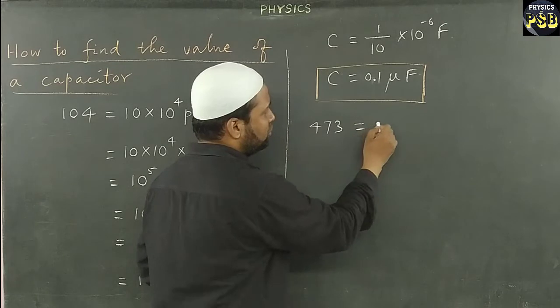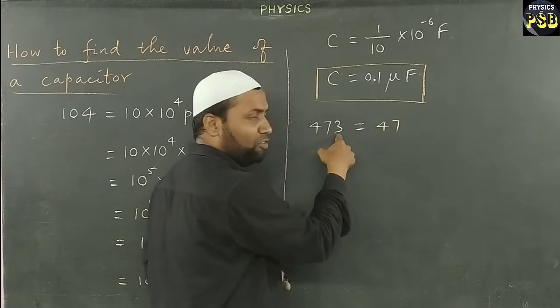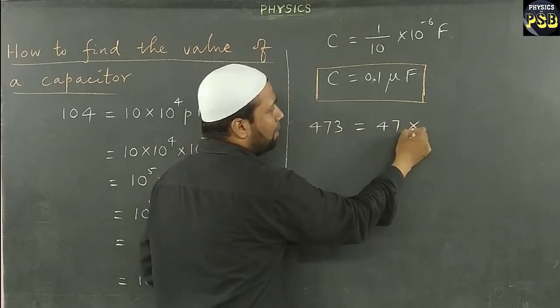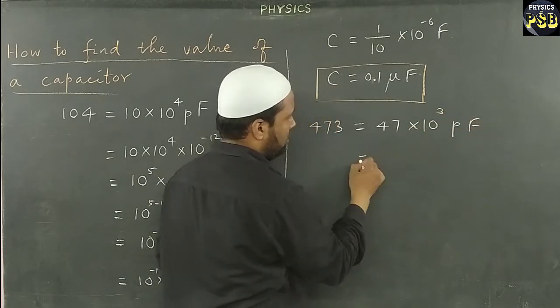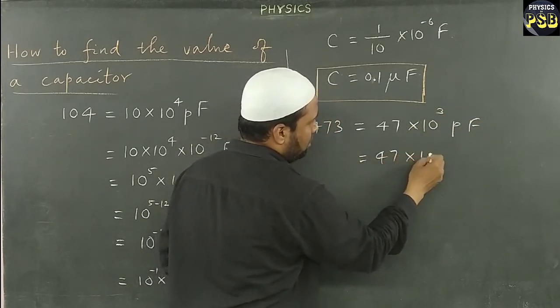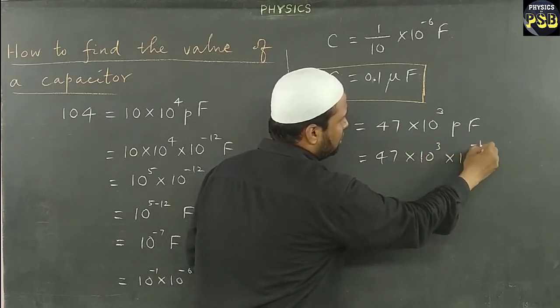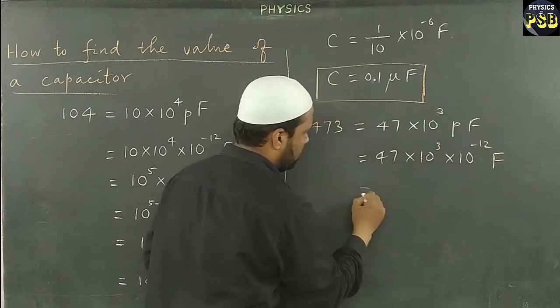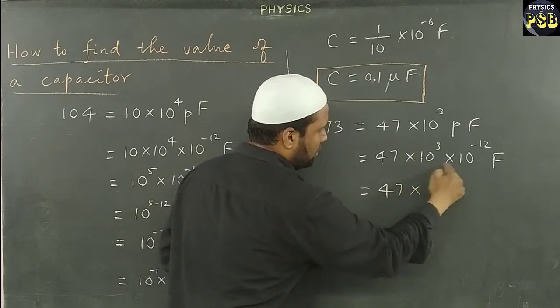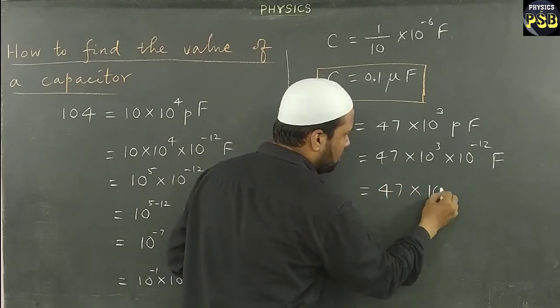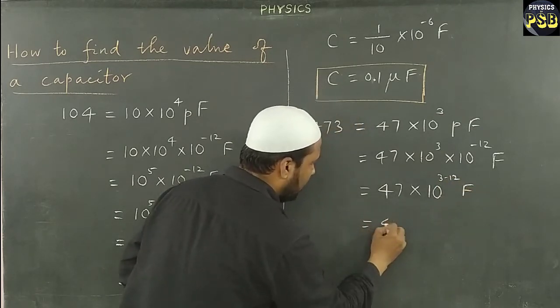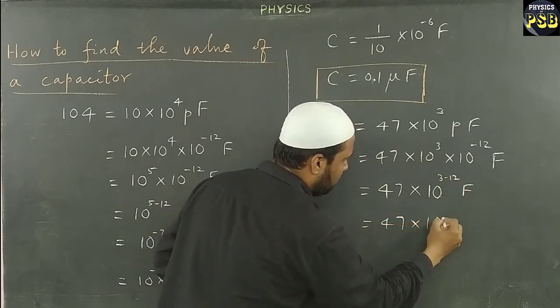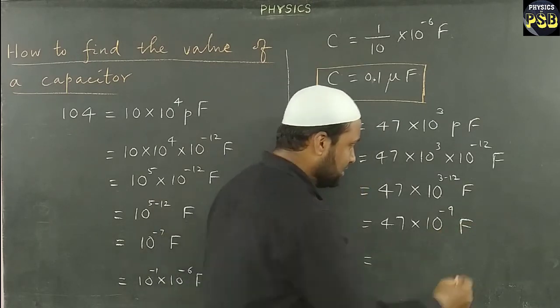Here we write the first two digits as such. Then we raise the third digit to the power of 10. Then picofarad. Here picofarad means 10^-12 farad. I multiply this to get 10^3 × 10^-12. So what I get? I get 47 × 10^-9 farad.